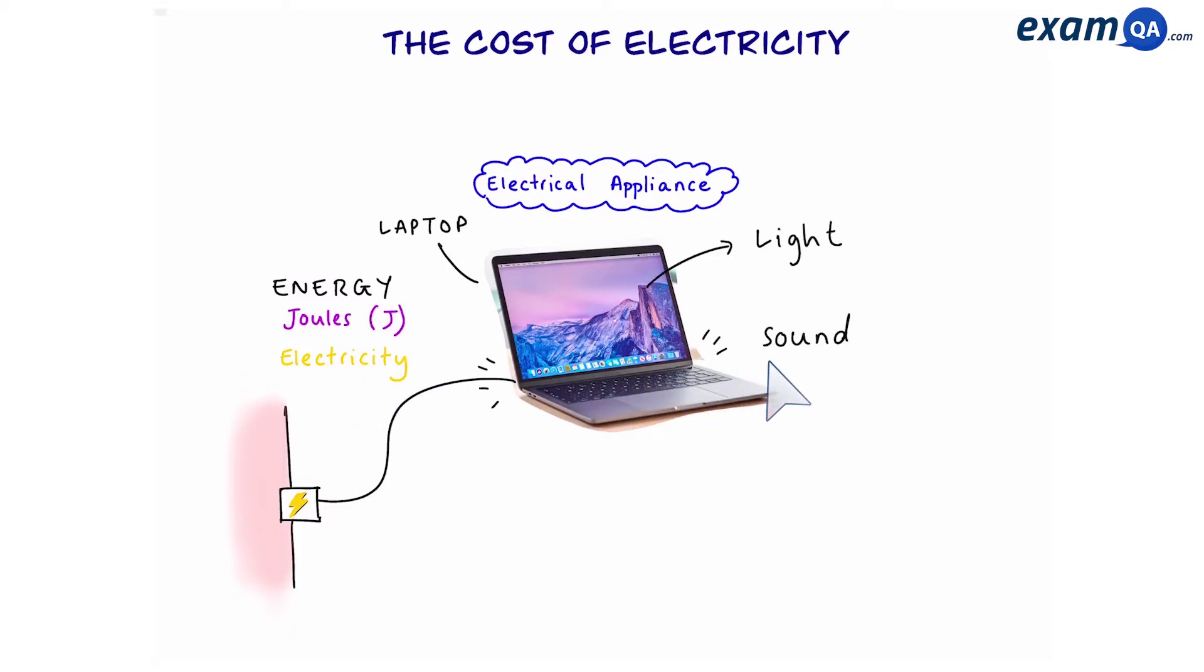The units for energy are joules. Let's say this hungry laptop feeds on 100 joules per second. The amount of energy that it uses per second can also be called the power. So this laptop has a 100 joule per second power, or we can just say 100 watts.